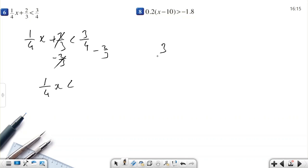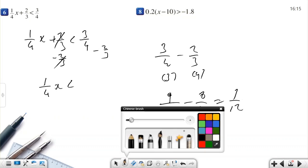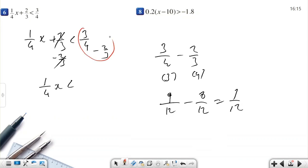How can we solve 3 over 4 minus 2 over 3? You need to make the denominators equal. So 3 times 3 is 9 over 12 minus 8 over 12. It equals 1 over 12. So the result of 3 over 4 minus 2 over 3 equals 1 over 12.